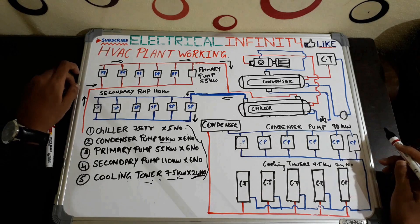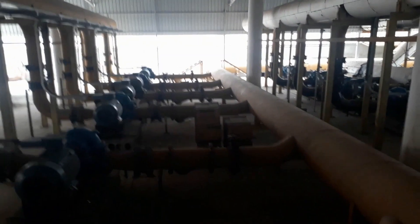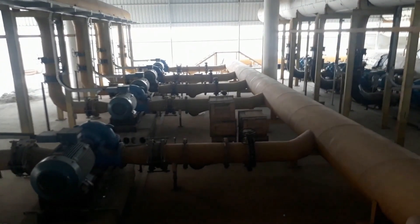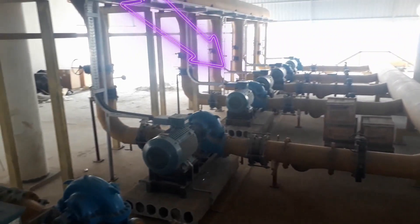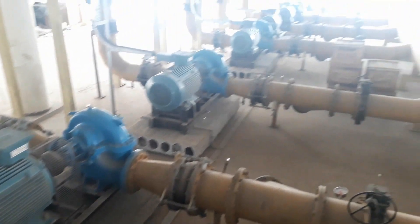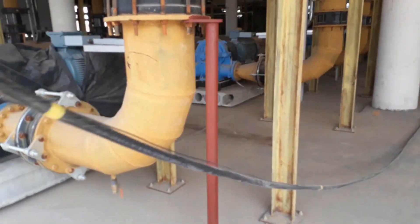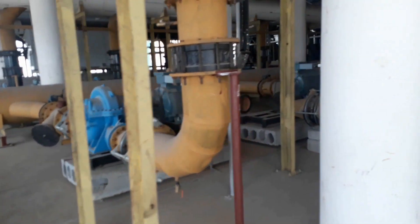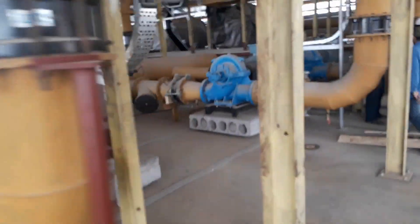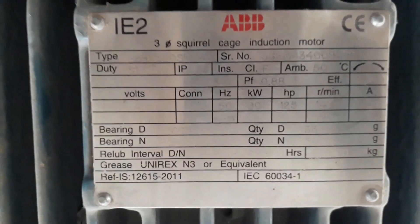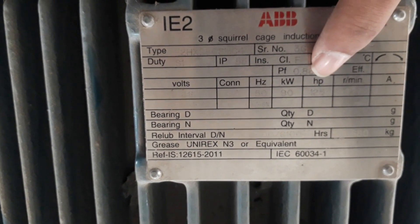These are the 6 condenser pumps used for pumping cool water from the cooling tower to the condenser for cooling of the refrigerant. The yellow pump carries cool water from the cooling tower and pumps it into the condenser. Each condenser pump is a 90 kilowatt, 125 HP, 50 Hertz motor.